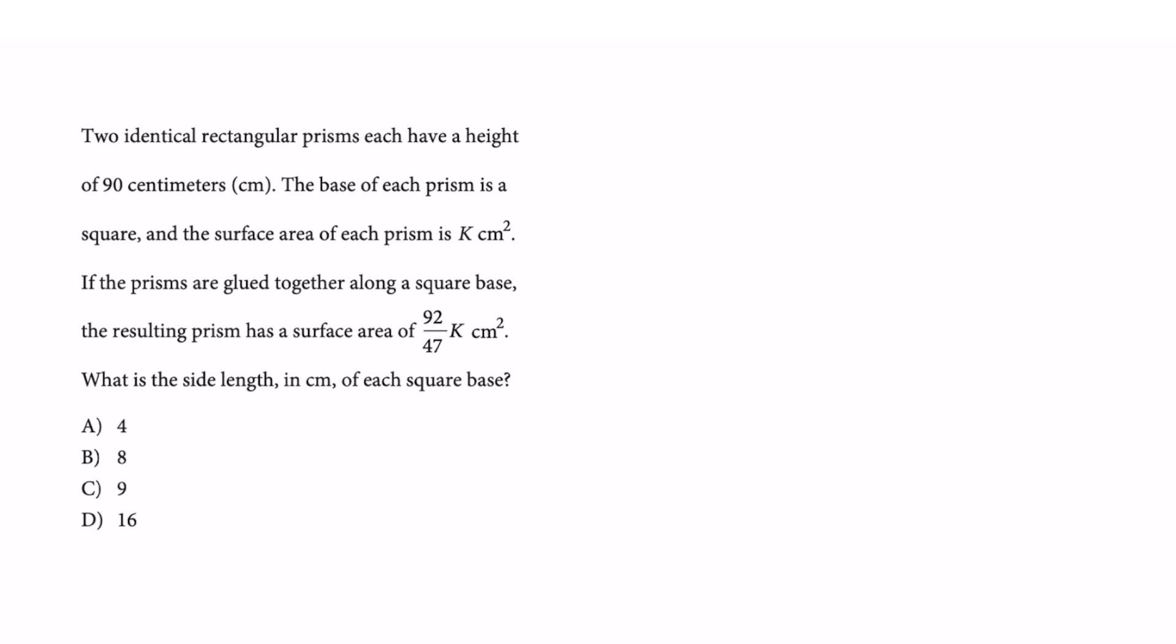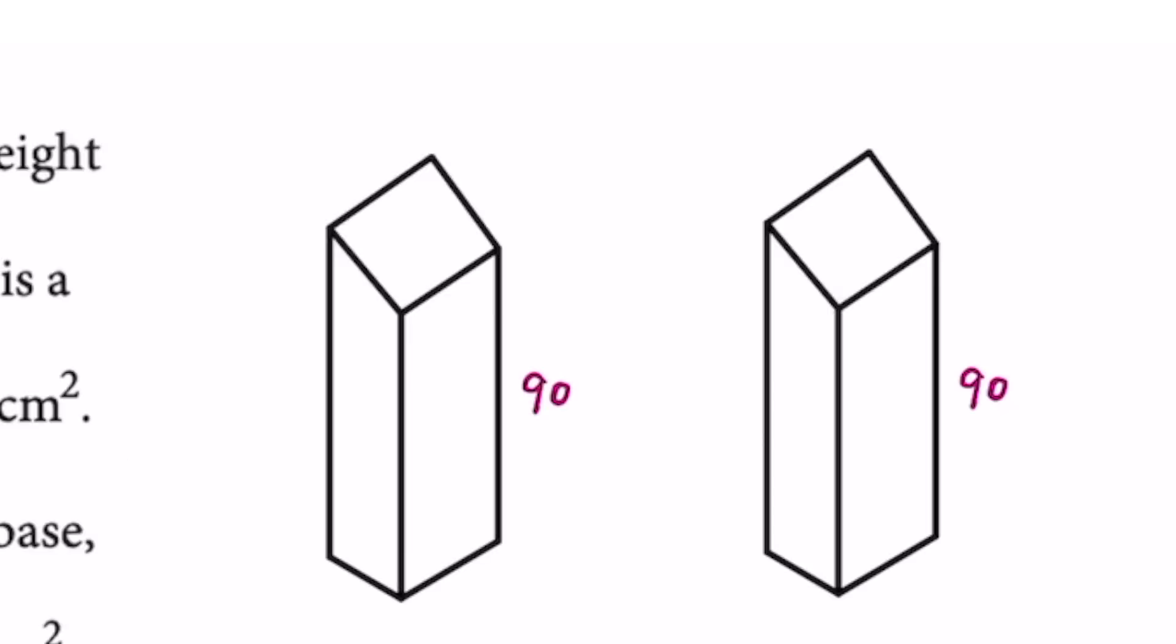We got two identical rectangular prisms that each have a height of 90 centimeters. So from that, we only know that this is 90 centimeters. The base of each prism is a square.